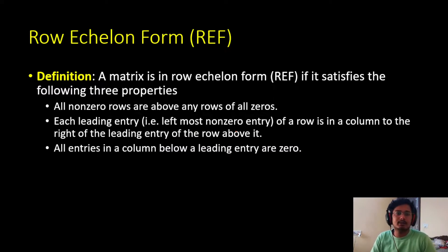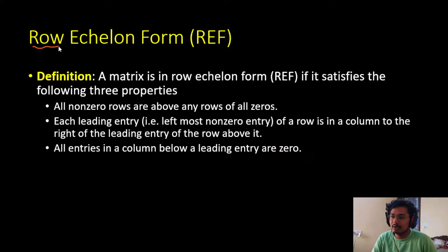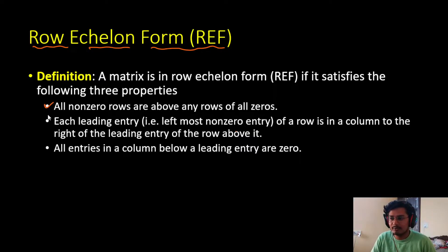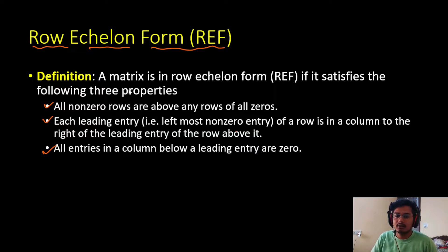Hello and namaskar. In today's video we are going to discuss the row echelon form. As we earlier studied elementary row transformation, where we saw three steps we can use to transform a matrix into a simpler matrix — row echelon form is similar to that. We reduce the matrix into a specific format. A matrix is in row echelon form if it satisfies three properties.